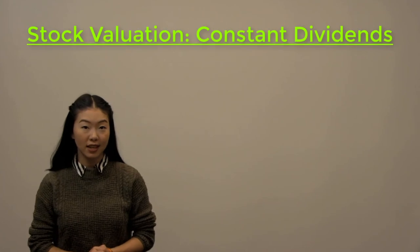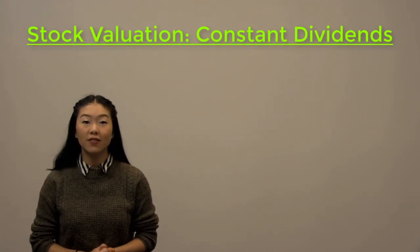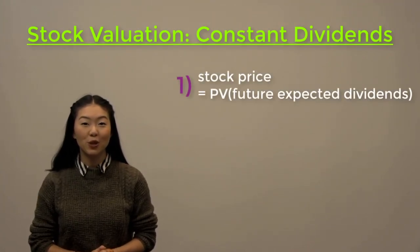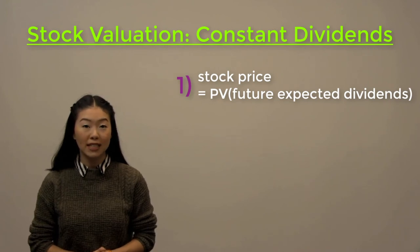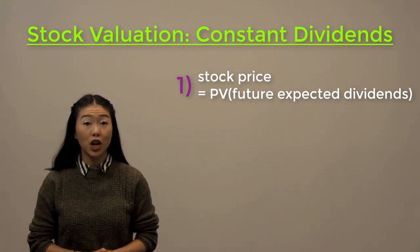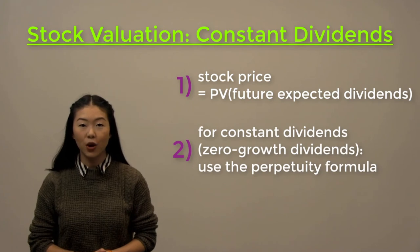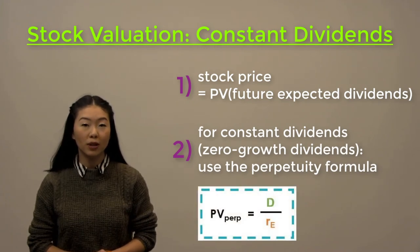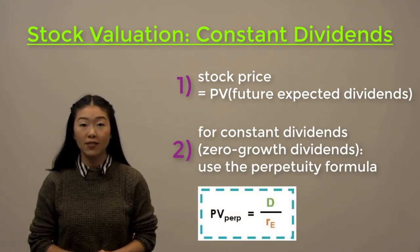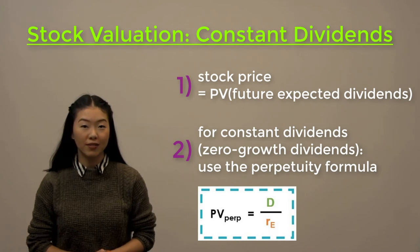Before we continue, let's recap what we have learned about calculating the price of a stock with constant dividends. First, we reminded ourselves that the price of a stock is equal to the present value of the future expected dividend payments. Therefore, for stocks that are not expected to grow, we borrowed the perpetuity formula to help us calculate the price of these stocks with zero growth dividends.